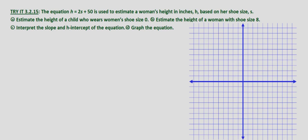So we can tell from the equation that the input is s and the output is h. s is where x would typically be and h is where y would typically be. So we're going to go ahead and label our graph s for shoe size and h which is height in inches.